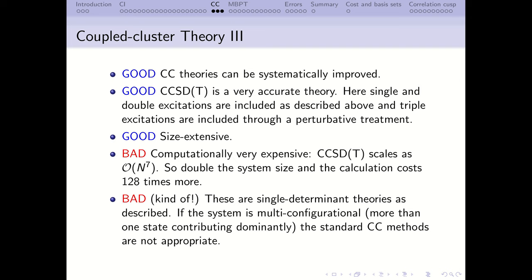For example, if you could solve one water molecule in a given basis in a minute, solving two water molecules would cost substantially more. There are ways to reduce the prefactor, but you can't really change the scaling—in the end it will kill you. You can use coupled cluster on reasonably sized systems like the benzene dimer, or with a very good computer something larger like naphthalene, but eventually you will run out of computing power and memory.